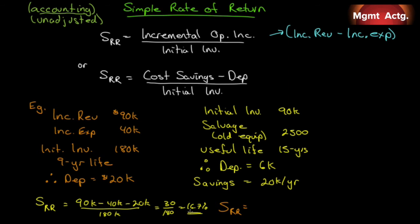The simple rate of return tells you what the rate of return is in the first year. It doesn't tell you how long it takes to get your money back, nor does it tell you if it's NPV positive or negative. It's just a quick way to look at a simple rate of return — if it's 16.7% and it costs us 12% to finance the project, it makes sense. That's it. It's just a fast way to do it.